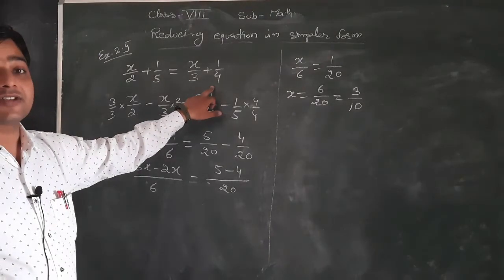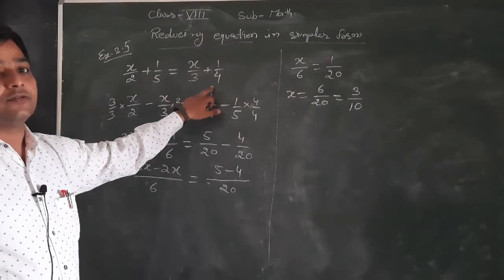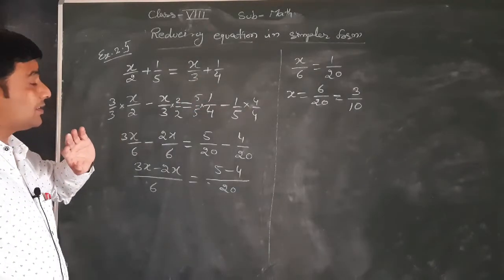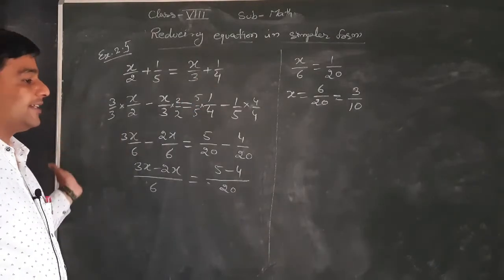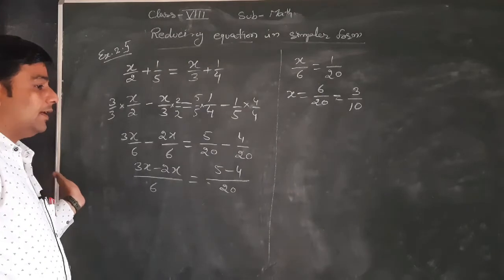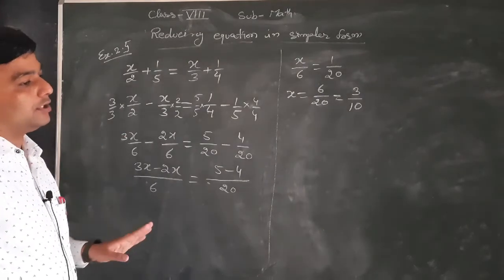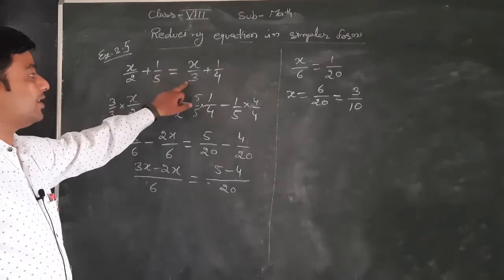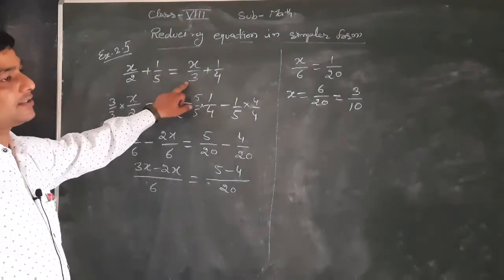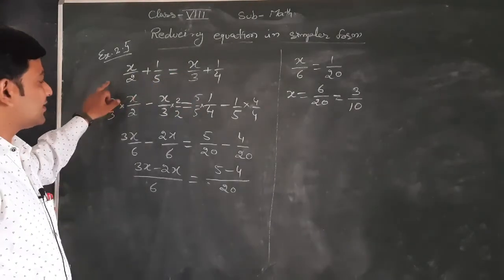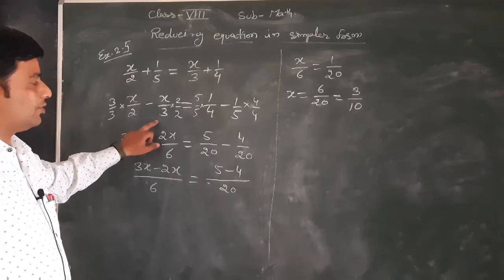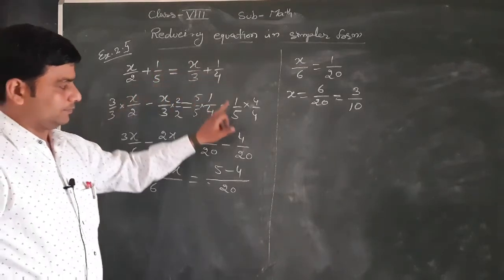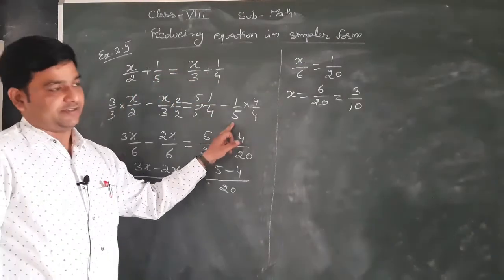To convert these equations into simpler form, first of all we keep x variables on one side and constants on the other side. x/3 is on the plus side, so after transposing it will become minus x/3 on the right-hand side. We will also transpose 1/5, so it becomes minus 1/5.